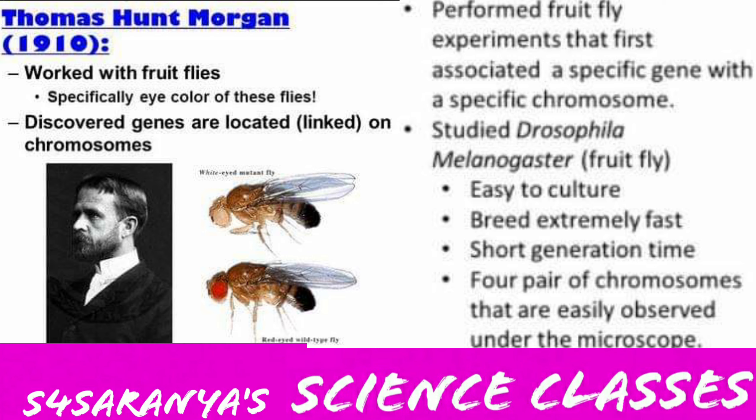The male is somewhat smaller than the female, making them easy to identify. You can see many types of hereditary variation, which can be observed with a low-power microscope. It has only 4 pairs of chromosomes, making chromosomal study with a microscope really easy. Because of all these characteristics, Morgan selected Drosophila as suitable material for genetic studies.